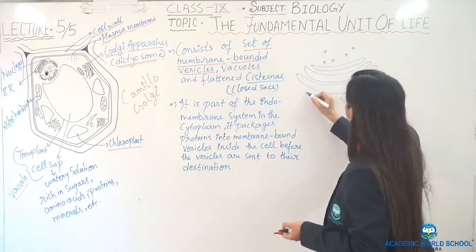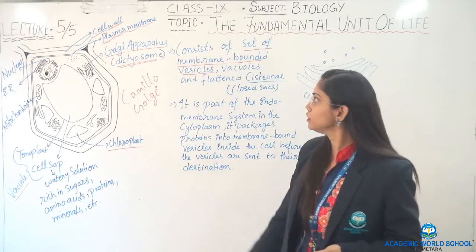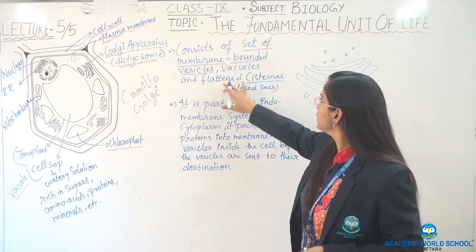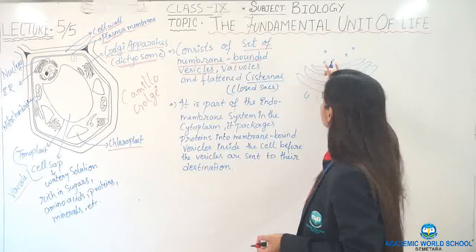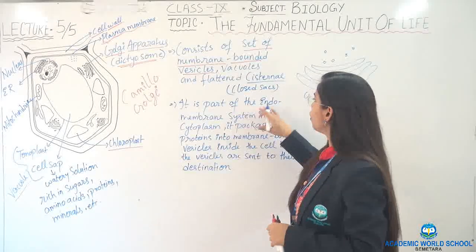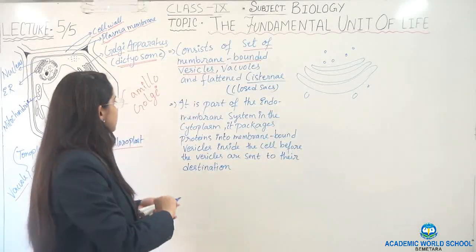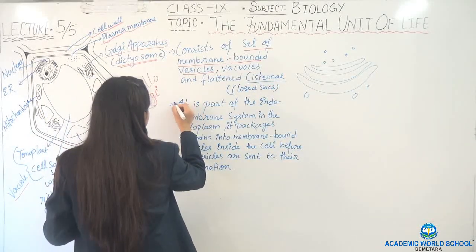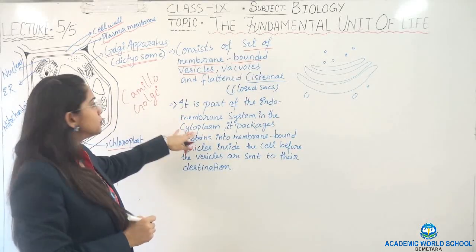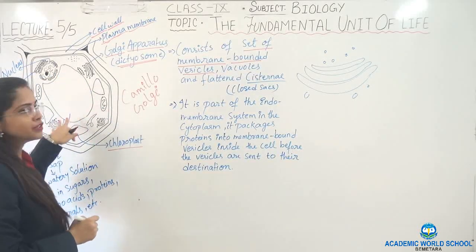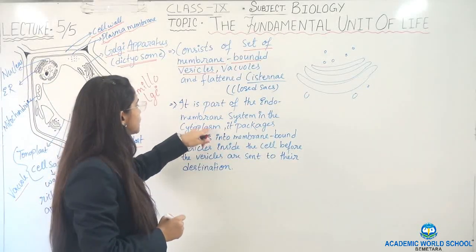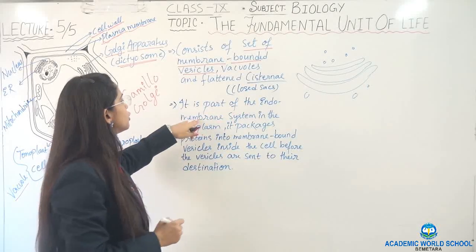There are also some vacuoles present around it. So it is a set of membranes, flattened cisternae, and vacuoles. The cisternae are closed stacks arranged parallel to one another. It is a part of the endomembrane system in the cytoplasm, because inside the cytoplasm there are different structures — the endoplasmic reticulum means certain structures inside the cytoplasm body. So this is a kind of endomembrane system.